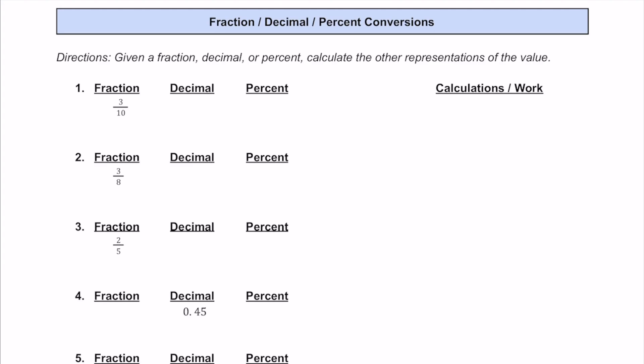Let's practice converting fractions, decimals, and percents together. For number one, we have this fraction of 3 tenths. If we just read that as it is, we can write the decimal as 0.3.